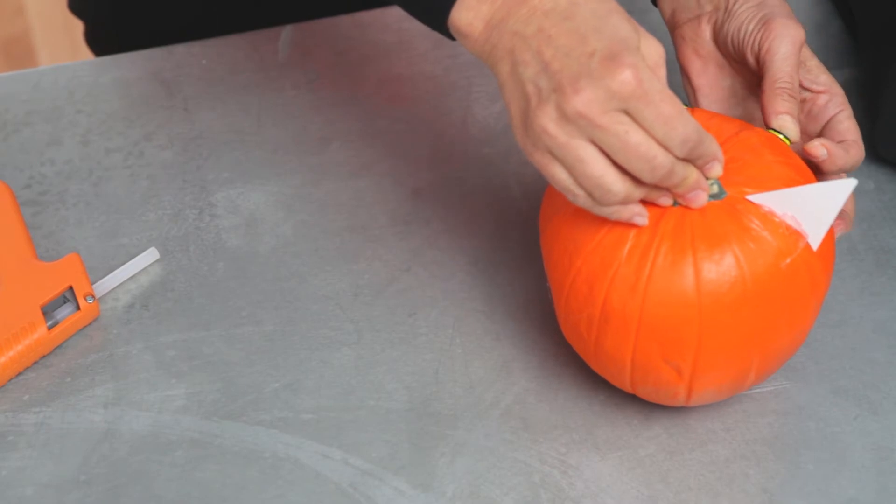Press the thumbtacks into the pumpkin for eyes. If you can't find flat thumbtacks you can use buttons or just cut circles out of black cardstock.